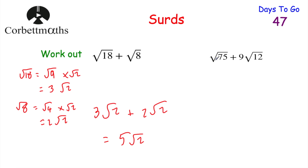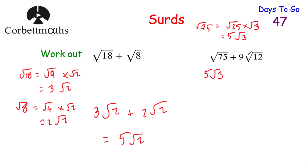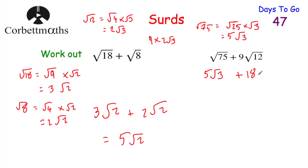This time we've got root 75 plus 9 root 12. Press pause and simplify both surds first. Root 75 equals root 25 times root 3, and the square root of 25 is 5, so that's 5 root 3. For 9 root 12: root 12 equals root 4 times root 3, which is 2 root 3. So 9 lots of 2 root 3 gives 18 root 3. Adding 5 root 3 and 18 root 3 gives 23 root 3. Well done if you got that.